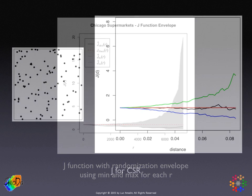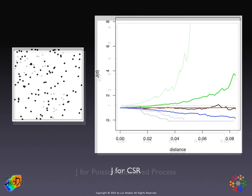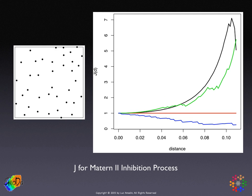Looking at artificially generated patterns: for a random pattern, the black line tracks the horizontal line at 1, never moving outside the randomization envelope — clearly complete spatial randomness. For the Poisson cluster process, the J function is below the red line throughout and below the envelope for at least a range of distances — clearly significant clustering. For the regular Matern 2 inhibition pattern, the black line is above the red line and outside the envelope for a range of distances, with some irregular patterns at larger distances characteristic of this function.